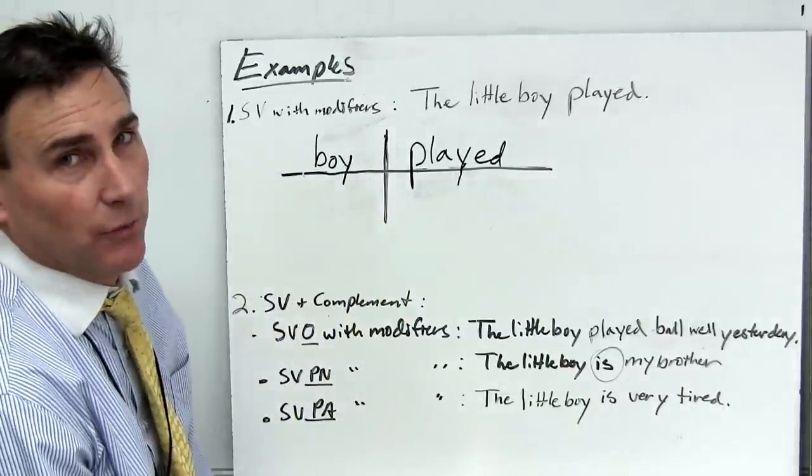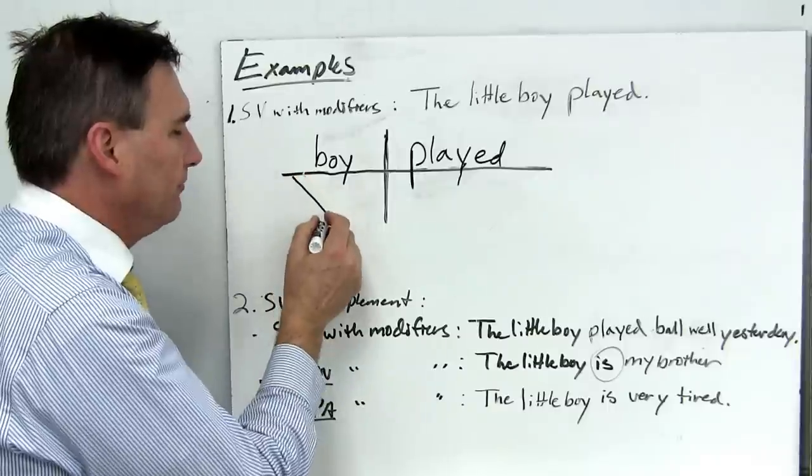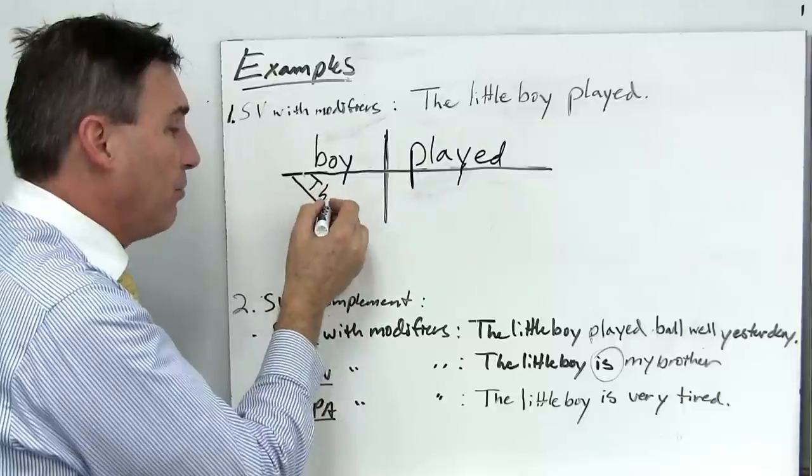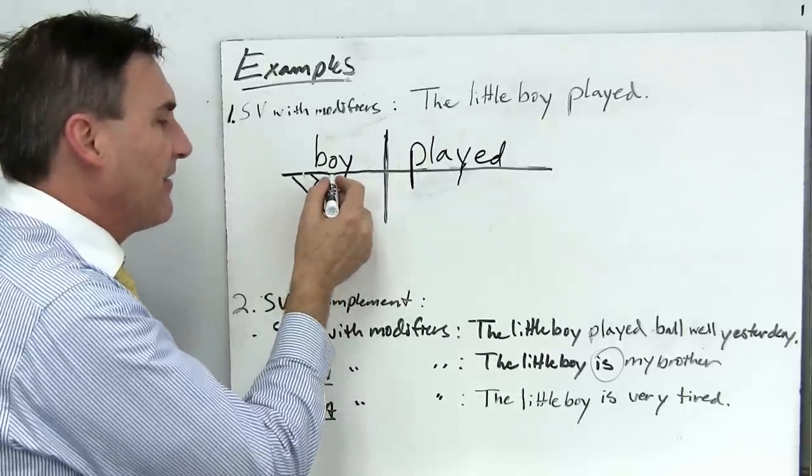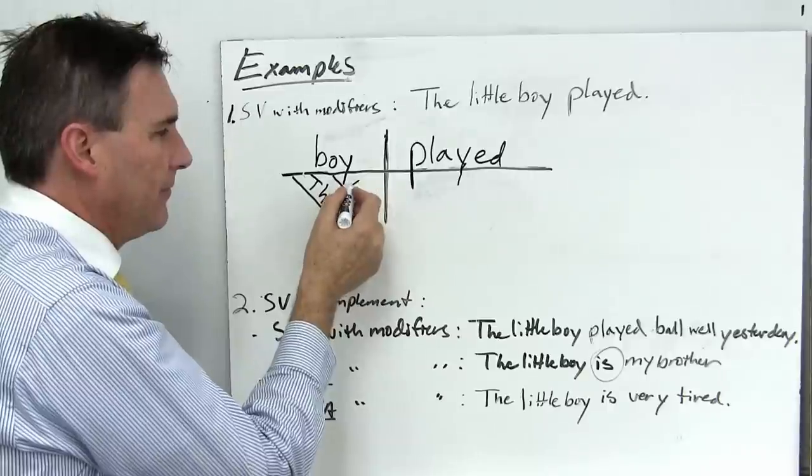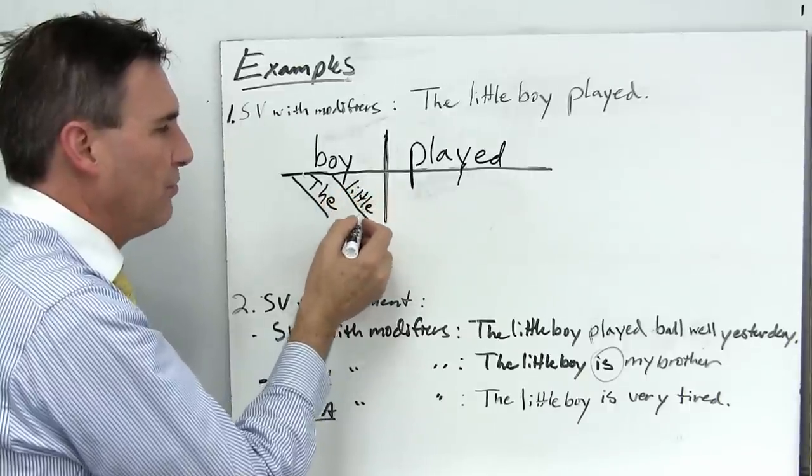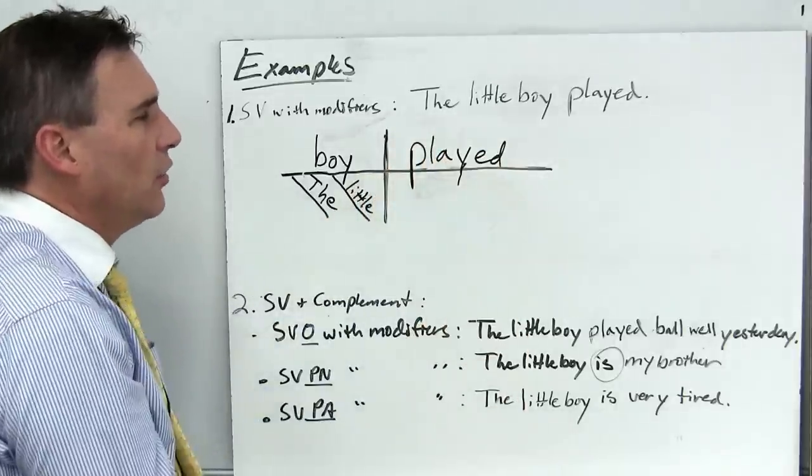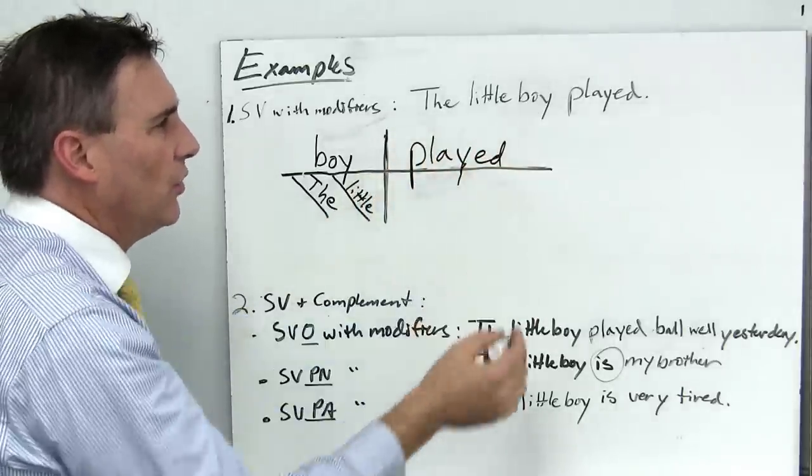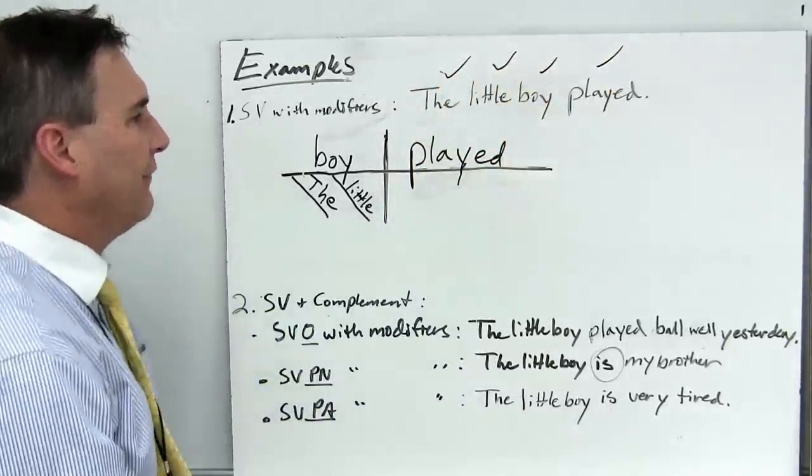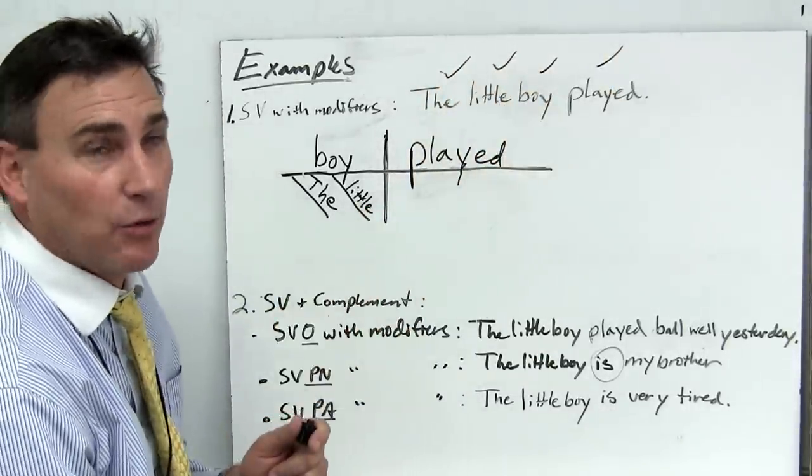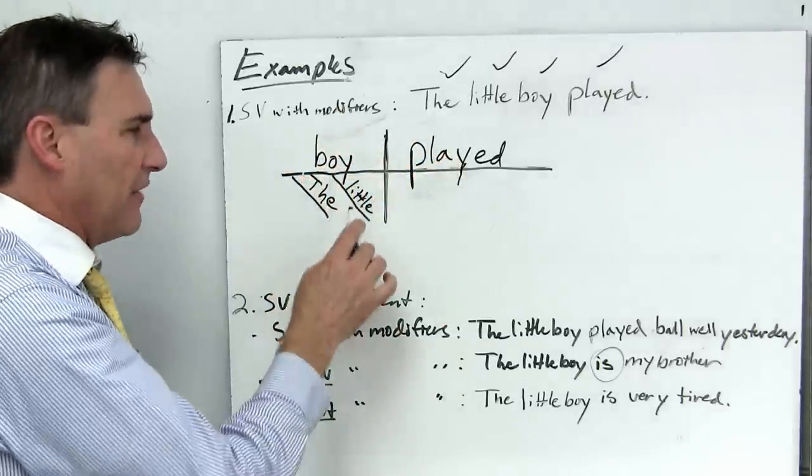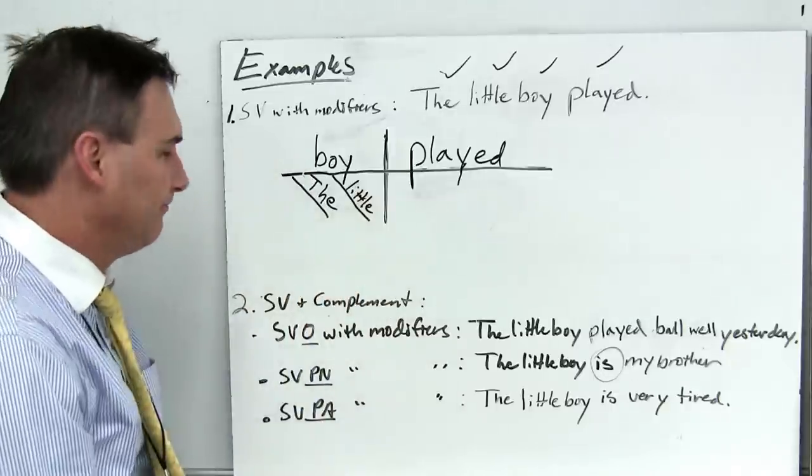Now we do have some modifiers. We've got a determiner, a type of an adjective describing this noun boy. The. Which boy? The boy. And we've got another simple adjective, little. Which boy? The little boy. So you can see we've taken care of each of the words in there. We've checked them off. They're all accounted for and this diagram shows how they work together. The subject drives the verb and we have two modifiers telling us more about the subject.